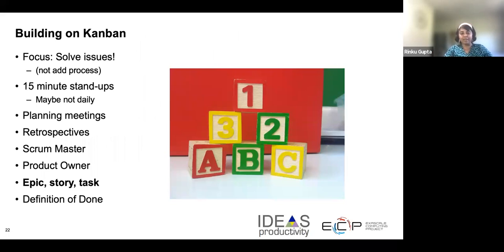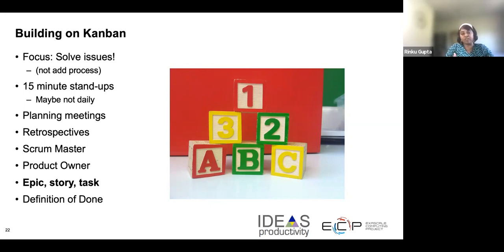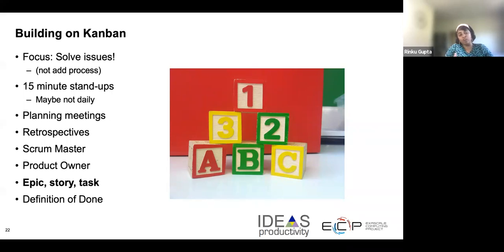Now that we have discussed basic Kanban, let's talk about how we can build on it. The focus should always be on resolving issues. One way to build upon existing Kanban is to have regular 15-minute stand-up meetings where people report their progress on different columns of the Kanban board. You can also have planning meetings and retrospective meetings. Retrospective meetings are a great way of figuring out what you've done on the project, what things have gone well, what things have not gone well, and so on.